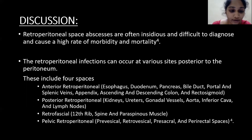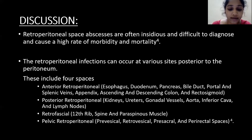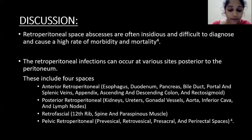The anterior retroperitoneal space includes the esophagus, duodenum, pancreas, bile duct, portal and splenic veins, appendix, and ascending and descending colon and rectosigmoid. The posterior retroperitoneal space includes the kidney, ureters, gonadal vessels, aorta, inferior vena cava, and lymph nodes. The retrofascial space includes the iliopsoas, spine, and paraspinous muscle. The pelvic retroperitoneal space includes pre-vesicle, retrovesicle, pre-sacral, and perirectal spaces.